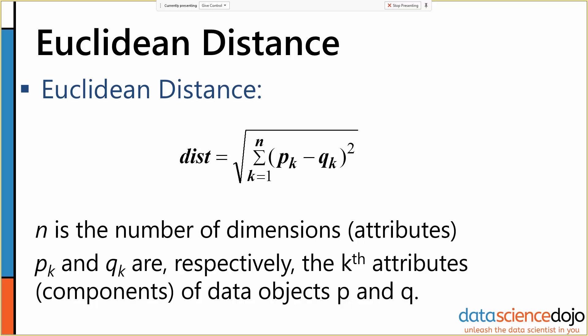Euclidean distance is what you'd hear called the distance formula in your high school algebra classes. Most people have seen it in two dimensions, and sometimes three. But one of the very nice things about Euclidean distance is that it generalizes very naturally to as many dimensions as you want.